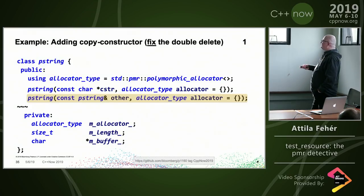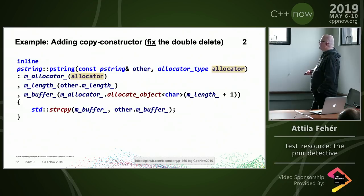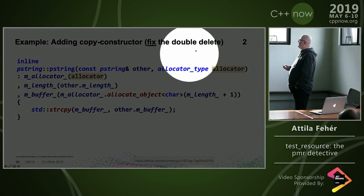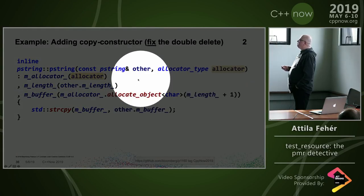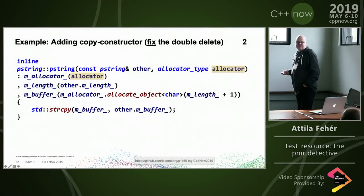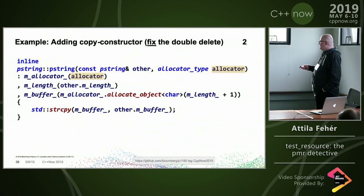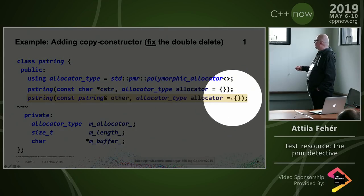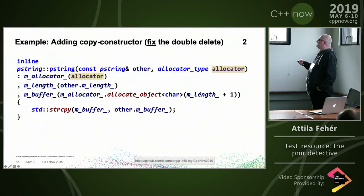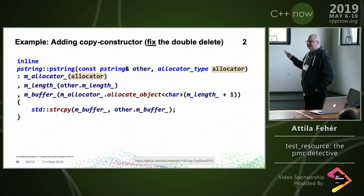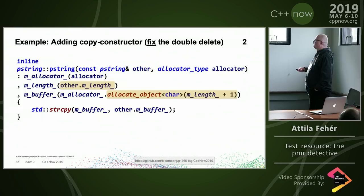We implement the copy constructor. By the PMR idiom, when copying you do not copy the source object's allocator. Instead you use either an explicitly provided allocator or a default-constructed one — never the one from the other object. The copy constructor therefore takes an optional allocator argument with a default, then performs the actual copy of data.